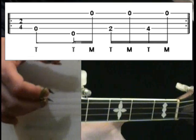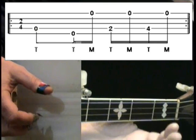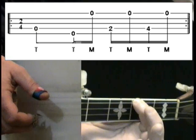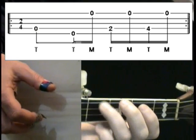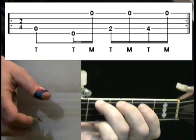It goes like this: thumb, then top and bottom string, and then this finger, bottom string, fourth fret this finger. So that's it.